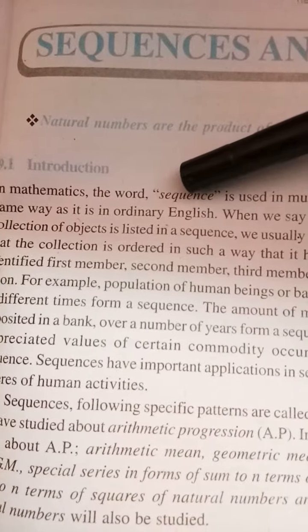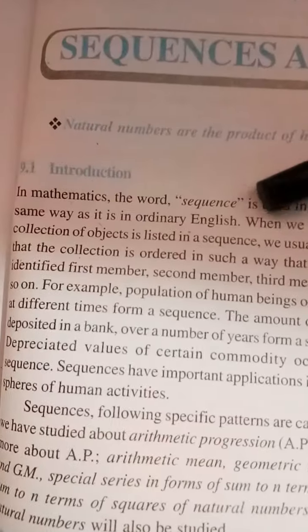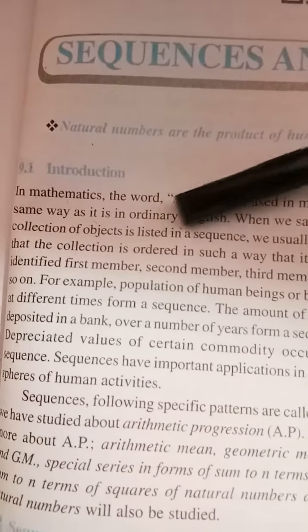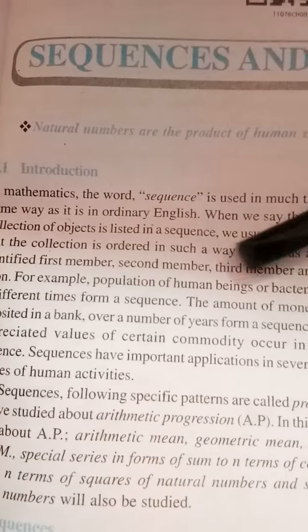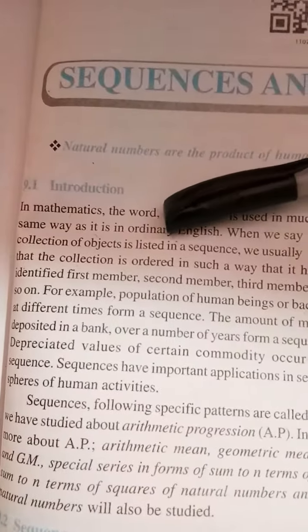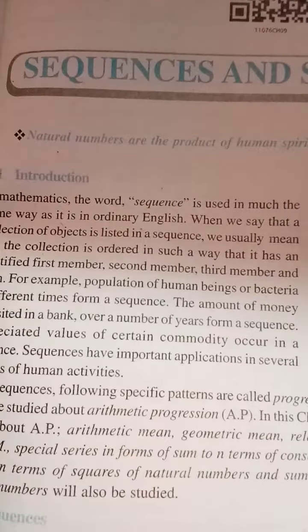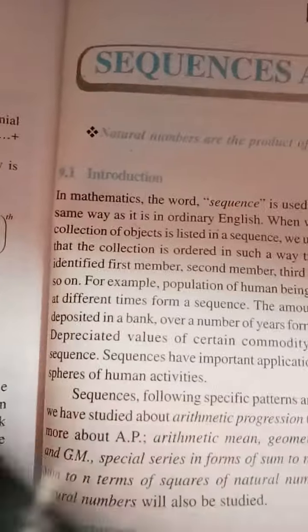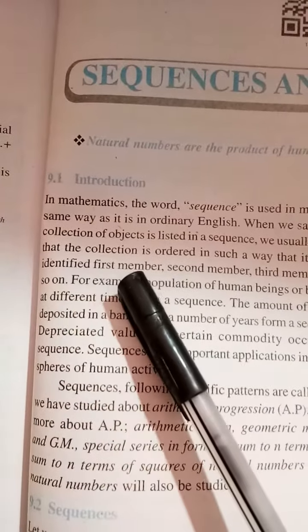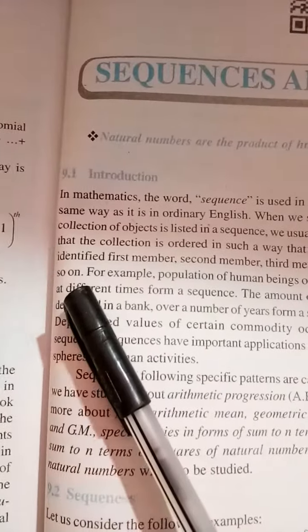In mathematics, the word sequence is used in much the same way as it is in ordinary English. When we say that a collection of objects is listed in a sequence, we usually mean that the collection is ordered in such a way that it has an identified first member, second member, third member, and so on.